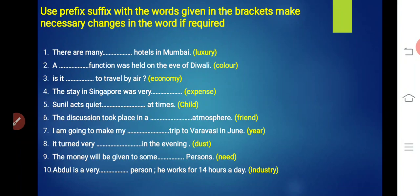Number eight. It turned very dash in the evening. In the evening it becomes... what? What will dust become? Dusty. It turned very dusty in the evening. Number nine. The money will be given to some dash persons. What will needy person become? Needy person. The money will be given to needy people. Abdul is a very dash person. He works for 14 hours a day. He works 14 hours a day. Abdul is what kind of person? Industry will become industrious. Industrious means hardworking, someone who is very diligent. Industrious spelling: I-N-D-U-S-T-R-I-O-U-S. Abdul is a very industrious person. He works for 14 hours a day.